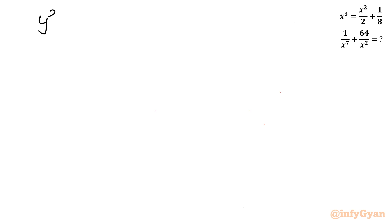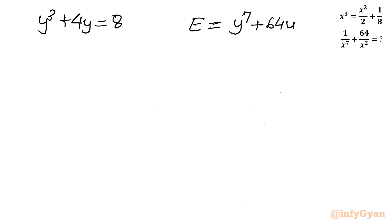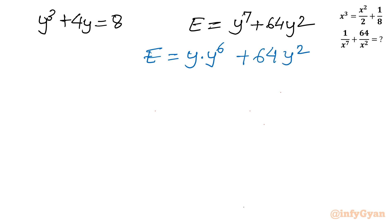Let us evaluate the expression. We have the equation y³ + 4y = 8 and the expression y⁷ + 64y². Using an exponent property, I can write E = y·y⁶ + 64y². From the equation, y³ = 8 − 4y.